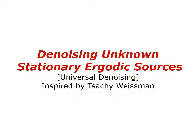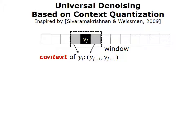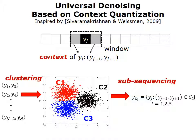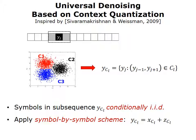We denoise a stationary ergodic input whose distribution is unavailable using a universal denoising scheme inspired by our colleague Tsachy Weissman. Similar to before, this is a sliding window scheme where, in addition to considering yj, we also consider the context — the symbols around yj. For illustration purposes, consider a two-dimensional context comprised of yj-1, the previous symbol, and yj+1, the following symbol. We cluster all of these contexts, and after that we perform a sub-sequencing step, where each of the sub-sequences is comprised of symbols yj whose contexts appear in the same cluster. Sivaramakrishnan and Weissman have proved that symbols in each of the sub-sequences are conditionally IID, and because of that, if we apply a symbol-by-symbol scheme to each of the different sub-sequences, that symbol-by-symbol scheme will be asymptotically optimal.